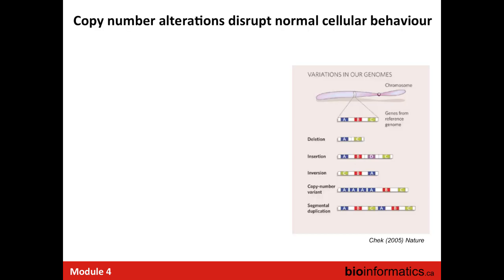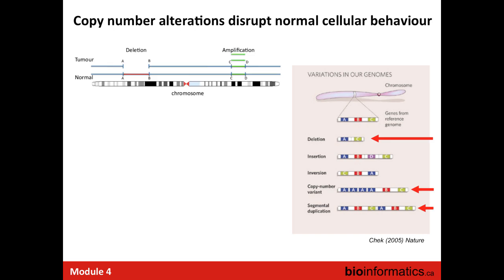Conceptually, we can imagine how a copy number alteration might appear when we consider the structure of a chromosome—how that structure differs between a normal sample and a tumor sample. A note on nomenclature: copy number alterations or aberrations refer to somatic changes present in tumor cells but not the normal, whereas copy number variations are polymorphisms present in the general population. There are databases of common copy number variations that we use to rule out specific gains or losses as putative drivers.